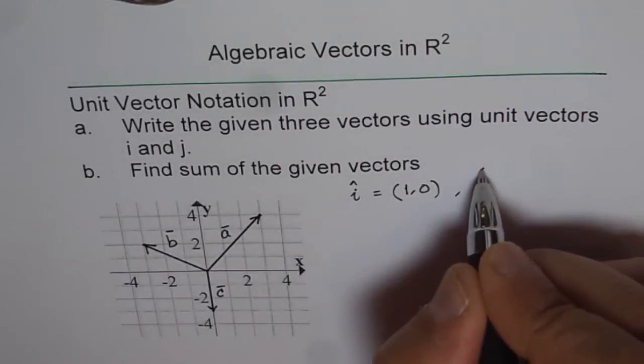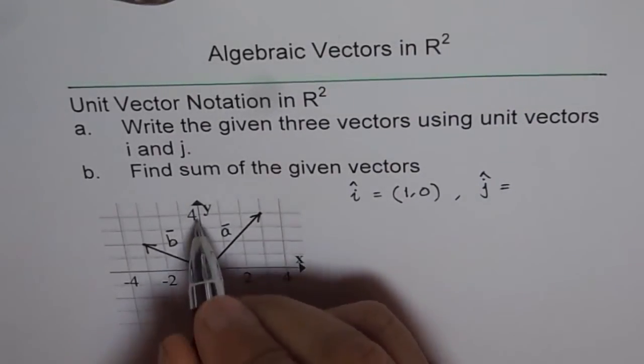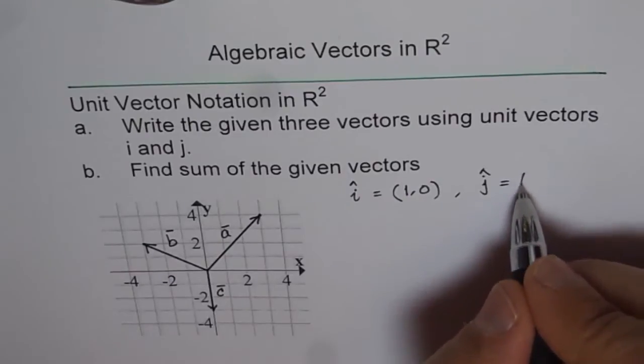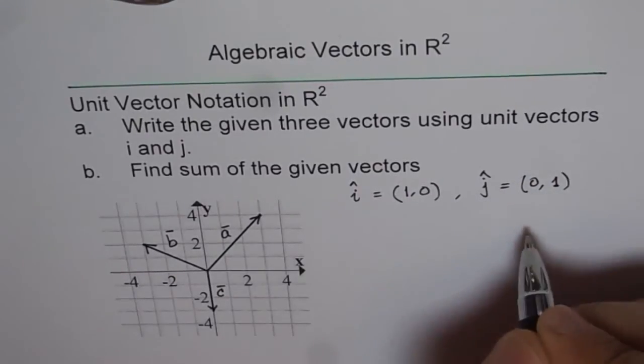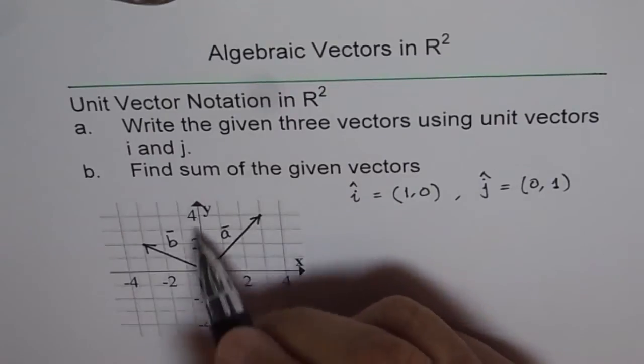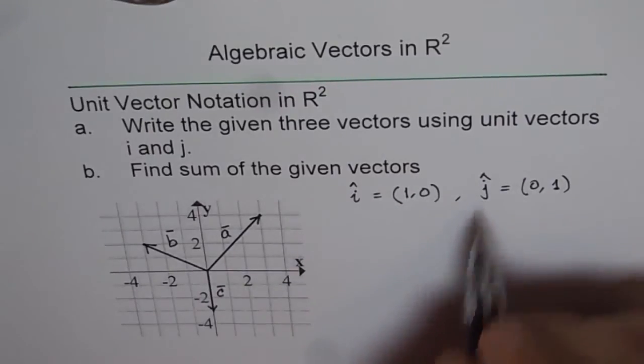Similarly, j is a unit vector along y-axis. And you could write this as (0, 1). Now (0, 1) is a unit vector along y-axis and that is the value of j.